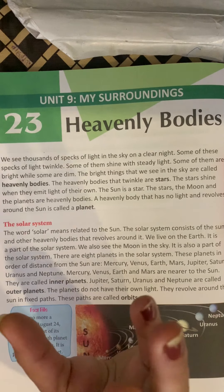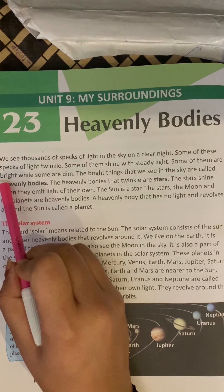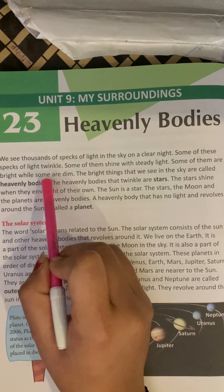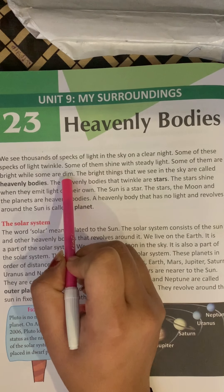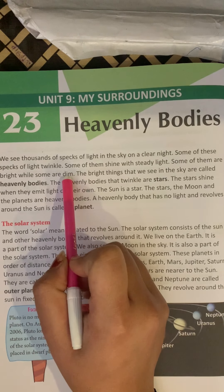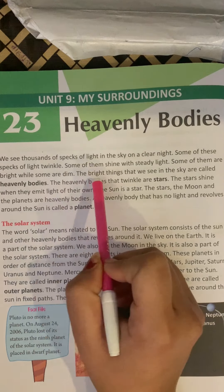Some of them shine with steady light. Lekin kuch stars ki light bilkul chamakti rehti hai. Woh twinkle nahi karti hai. Some of them are bright and some are dim. Kuch stars bahut bright hote hai, aur kuch bahut dim hote hai.